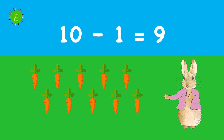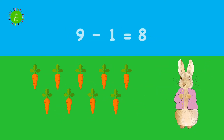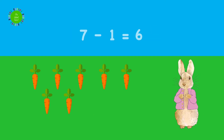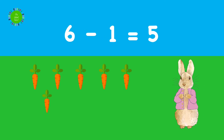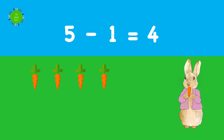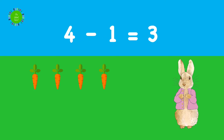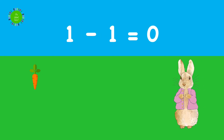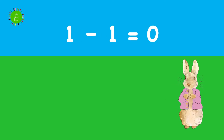Ten and one less is nine. Nine and one less is eight. Eight and one less is seven. Seven and one less is six. Six and one less is five. Five and one less is four. Four and one less is three. Three and one less is two. Two and one less is one. One and one less is zero.